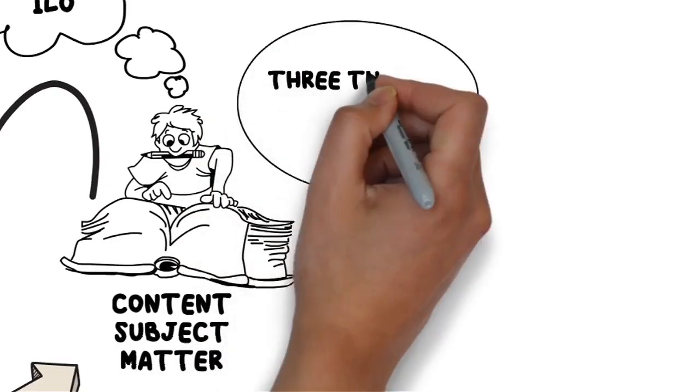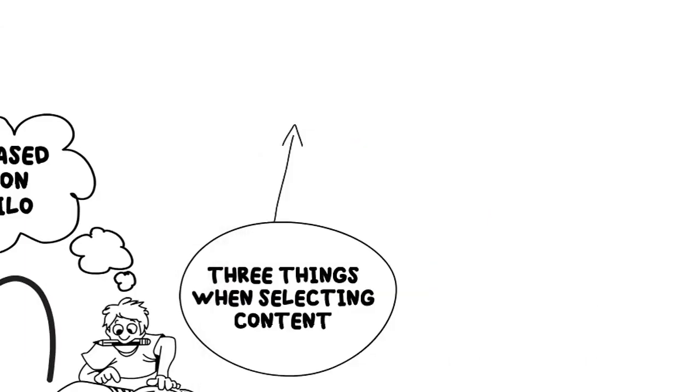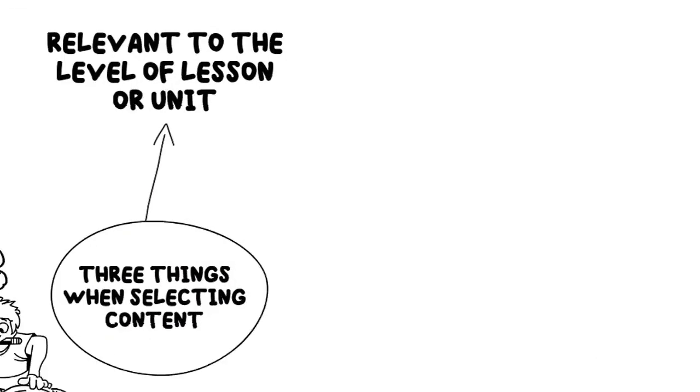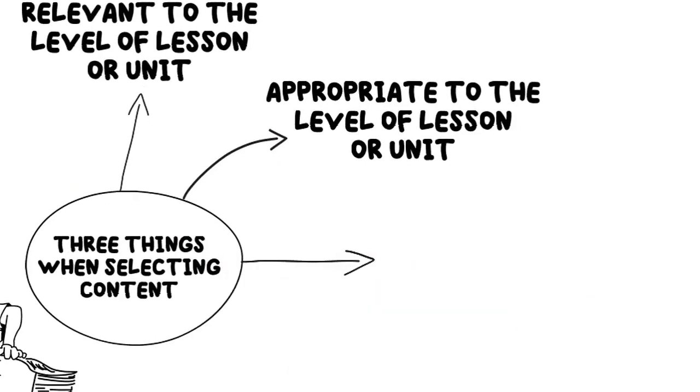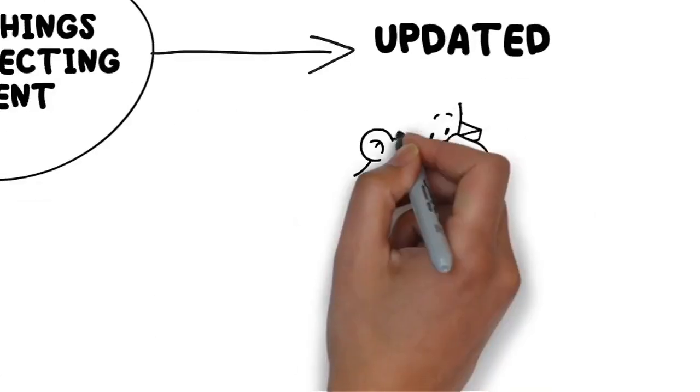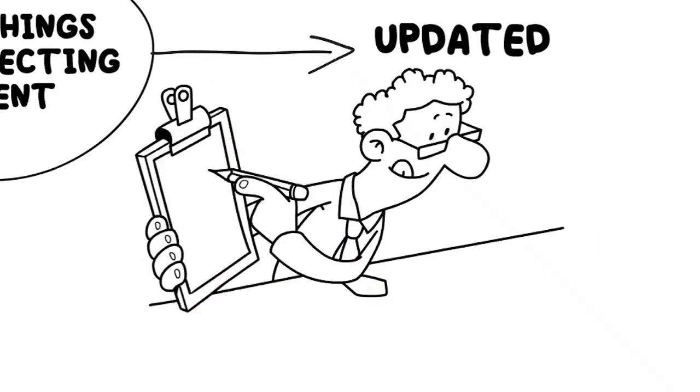We have to remember three things in selecting content. It should be relevant to the level of the lesson or unit. It should be appropriate to the level of the lesson or unit. And it should be up-to-date and, if possible, it should reflect current knowledge and concepts.